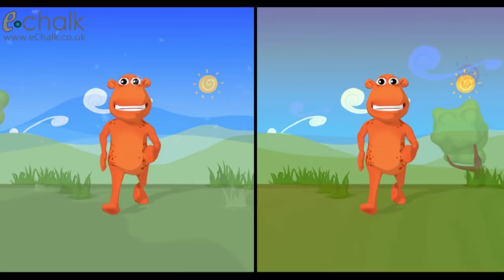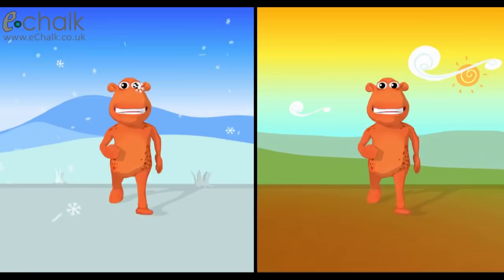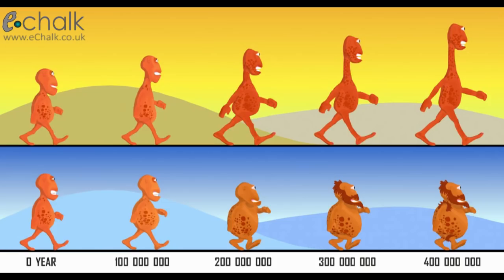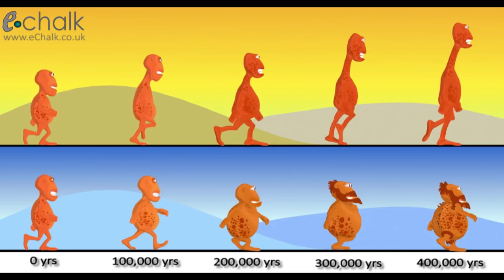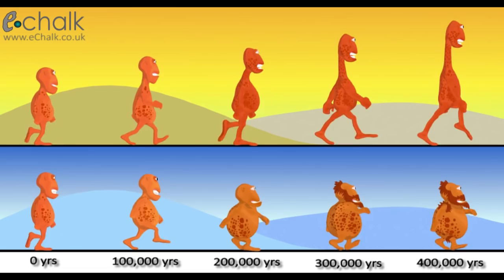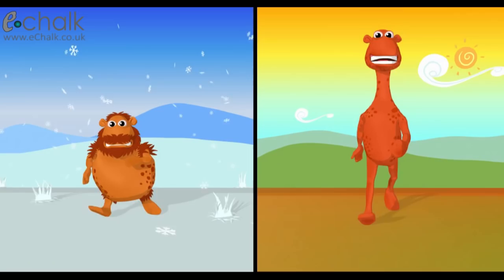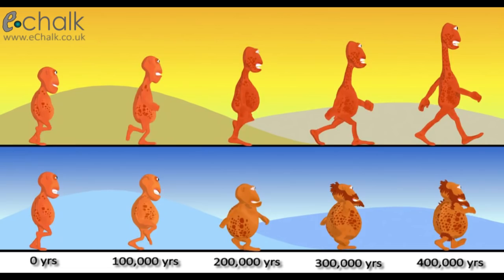Look at what happened to the tribes of Lumpties as their environments changed. Each group of Lumpties have adapted, over many generations, to suit the environment in which they live. This is called adaptive radiation. How will this change of environment affect their appearance, and why have these changes taken place?